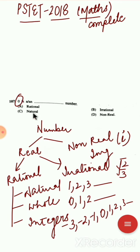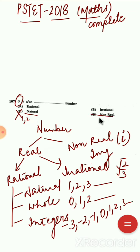So, which number is zero? Zero is not a natural number because natural numbers start from one. It is not non-real (iota). It is not irrational. So which number is it? Zero is a rational number.